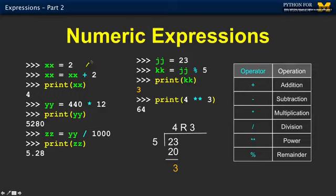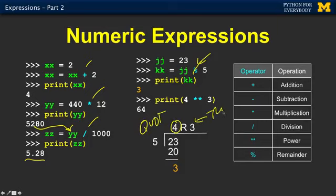So the addition operator, pretty straightforward. I've been using that without even talking about it. The multiplication and the division - this is 5,280 divided by a thousand, which gives me 5.28. But the one that's probably the most interesting is this modulo or remainder operation. The way the remainder operation works is it does the division, but instead of giving the quotient, it gives the remainder. So 5 divided by 23 is 4 remainder 3. The 3 is what you get back.